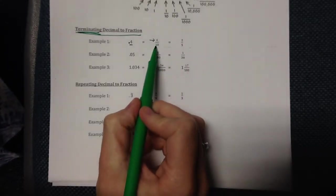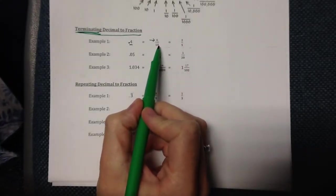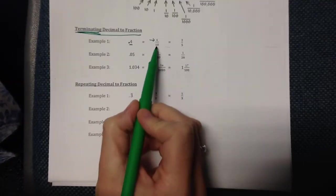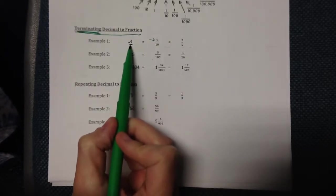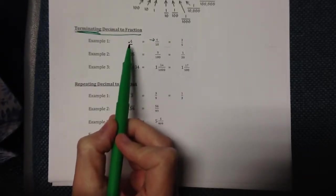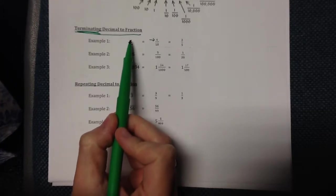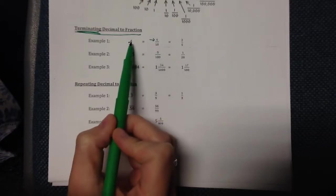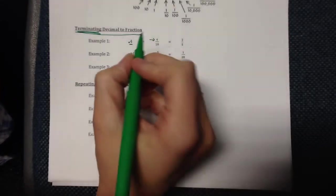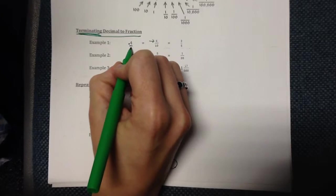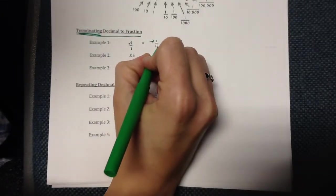Since there was only one number, we are going to put a one with one zero after it on the bottom. The reason we put a ten underneath is because this is the tenths place — after the decimal, the first number we come to is called the tenths place. So if there's just one number in the tenths place, we put that number over ten. One number after the decimal means one zero on the bottom.